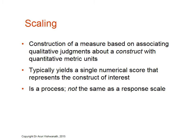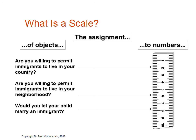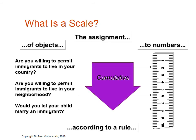We always differentiate between scales or multi-item scales, scaling, and a response scale. Here's an example of a scale measuring people's views or attitude towards immigration. There are three items — three qualitative statements. The first asks: are you willing to permit immigrants to live in your country? The second: are you willing to permit immigrants to live in your neighborhood? The third: would you let your child marry an immigrant? This shows a cumulative rule — if you agree to the third statement, you're more likely to agree to the second and first; if you agree only to the second, you likely agreed to the first.